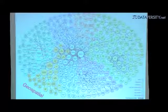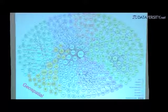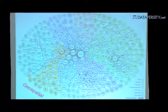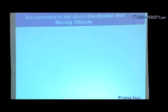Guess who made this particular picture? The people from DBpedia — because they're in the middle. But they're also an amazing, fantastic dataset, so they deserve to be there. That's a little background on RDF graph databases and linked open data, but that's just background because I promised to talk about geospatial and moving objects.